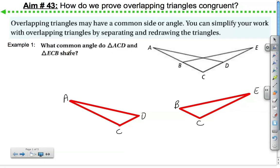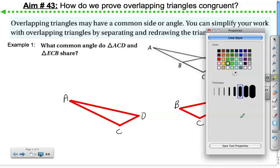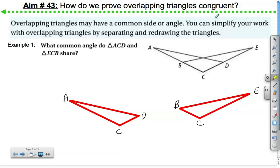So the question is asking us, what common angle do triangle ACD and triangle ECB share? The reason this is asking us this is because when we have overlapping triangles, they may have a common side or an angle. This is pretty common when we have overlapping triangles, although not always the case. As we can see over here, angle C is shared by both triangles. So here's angle C in triangle ACD and the same exact angle C in triangle ECB.